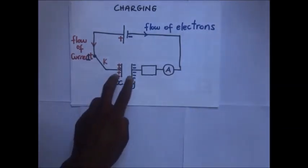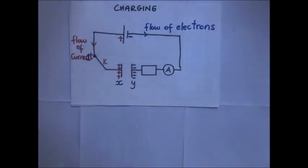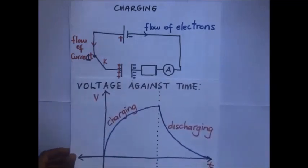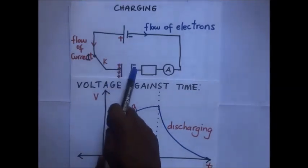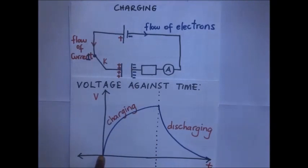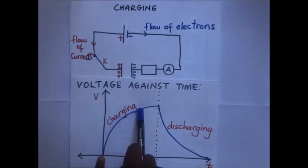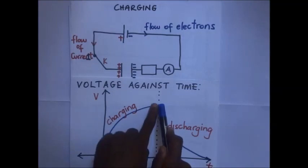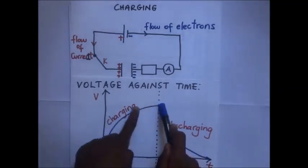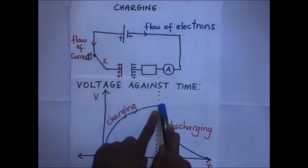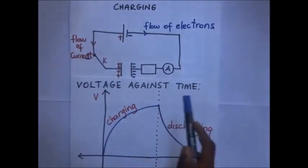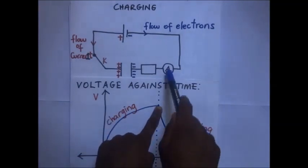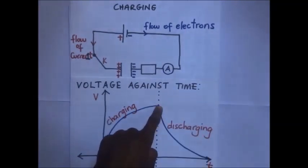Looking at how the potential difference across the capacitor varies with time during charging: at first the PD across the plates is zero. As charging continues, the PD increases until it reaches the maximum voltage — equivalent to the EMF of the cell — at which point charging stops. The ammeter is no longer deflecting, meaning current is not flowing anymore.